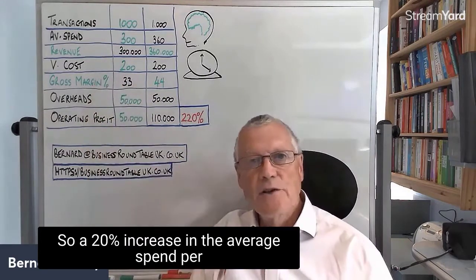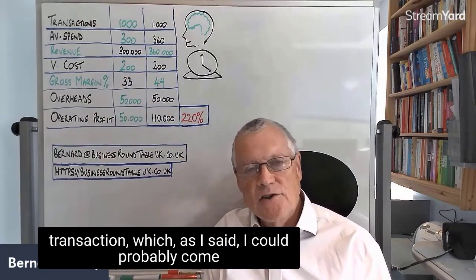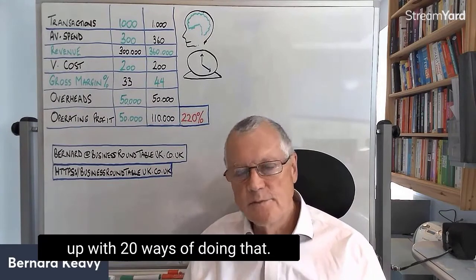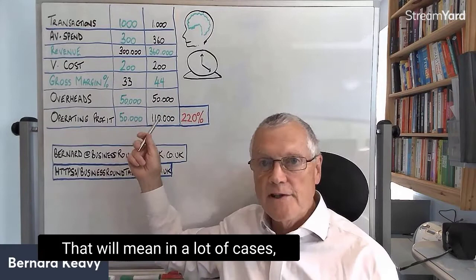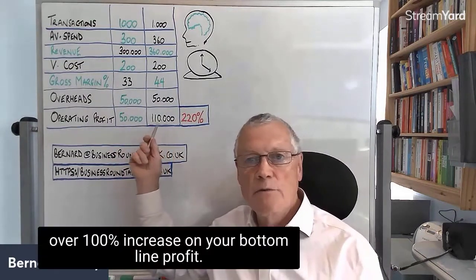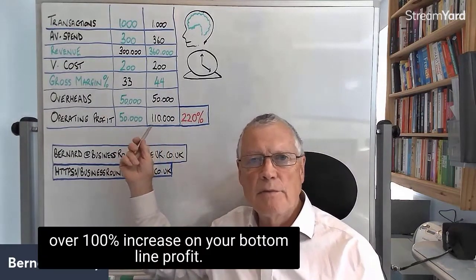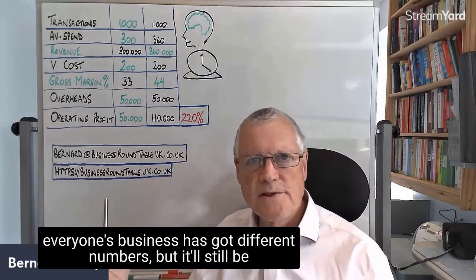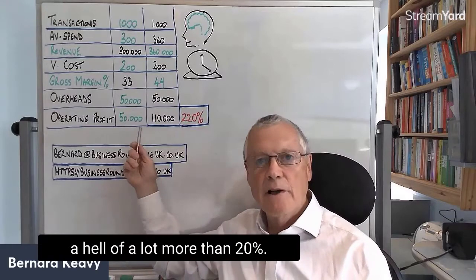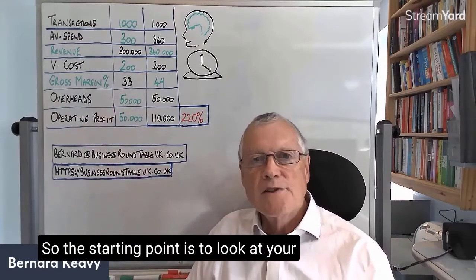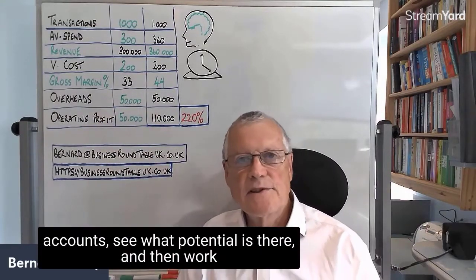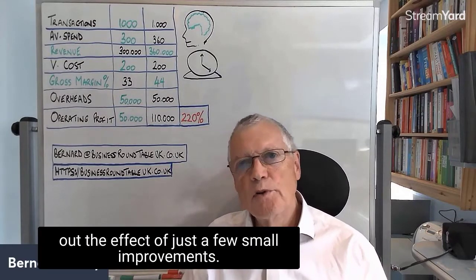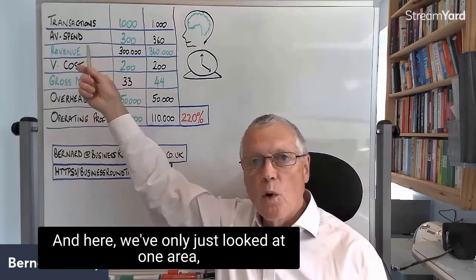A twenty percent increase in average spend per transaction — and I could probably come up with twenty ways of doing that — will mean in a lot of cases over a hundred percent increase in your bottom line profit. It might not be a hundred percent in every instance because every business has different numbers, but it will still be a lot more than twenty percent. So the starting point is to look at your accounts, see what potential is there, and work out the effect of just a few small improvements. And here we've only looked at one area.